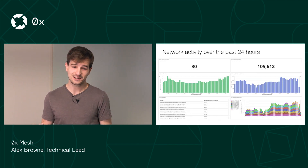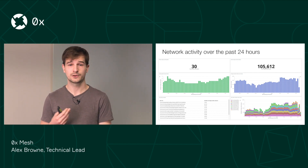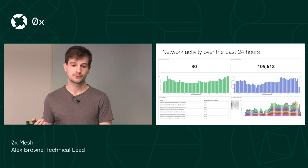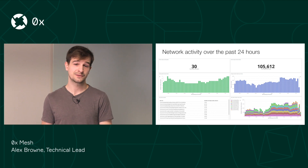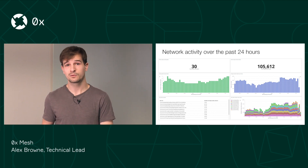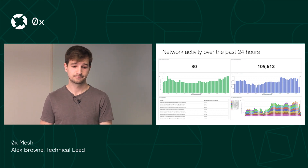I took a screenshot of our internal dashboard, which is keeping track of some metrics for Mesh. Over the past 24 hours, we've had 30 unique peers enter the network, and we've shared a total of 105,000 orders. So we're tracking this over time, and we're excited to see it continue to grow even after just two weeks.